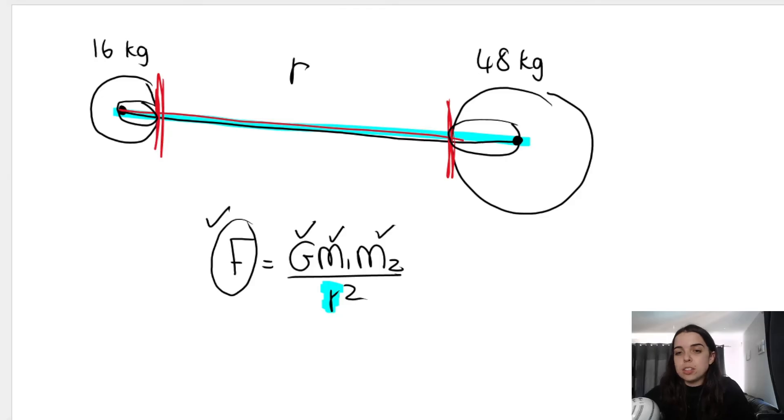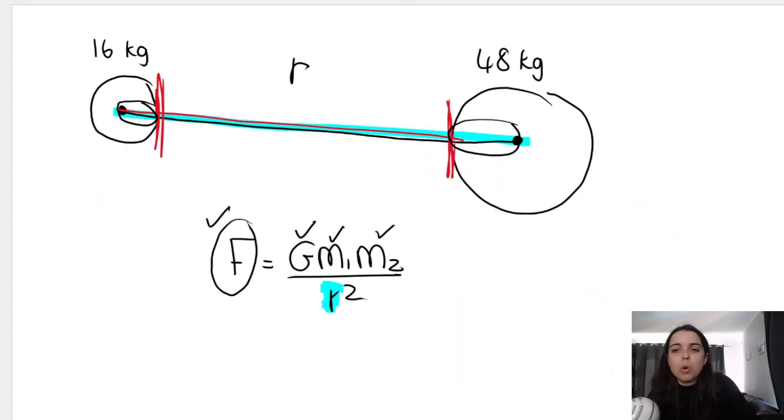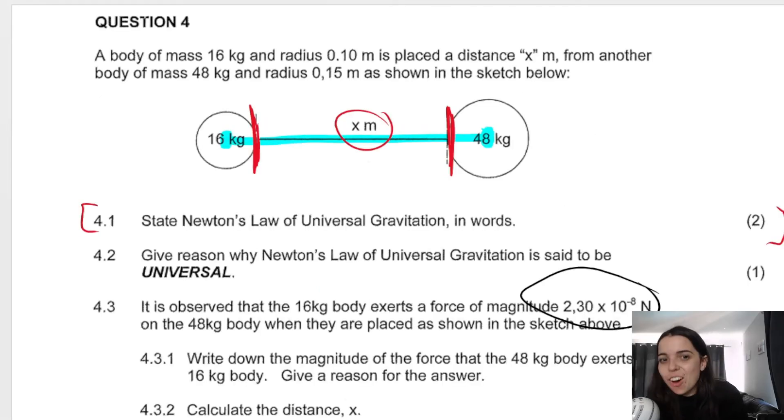Now those things that I circled, the distances that I circled, this distance over here, and this distance over here, what are those distances? Yup, those are the radiuses or the radii of my bodies. So the 16 kilogram had a 0.1 radius and the 48 kilogram had a 0.15 radius.